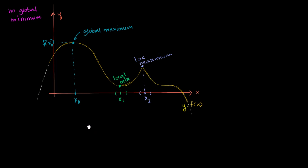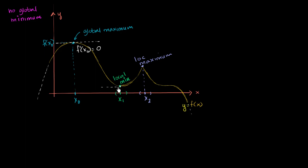How can we identify those if we knew something about the derivative of the function? Let's look at the derivative at each of these points. At this first point right over here, if I were to visualize the tangent line, it would look something like that. So the slope here is 0 — f′(x₀) is equal to 0. The slope of the tangent line at this point is 0. Over here at x₁, the tangent line would look something like that, so f′(x₁) is also equal to 0.